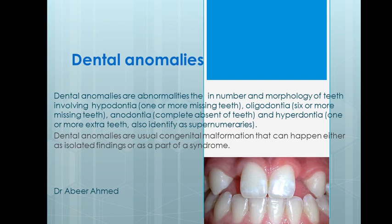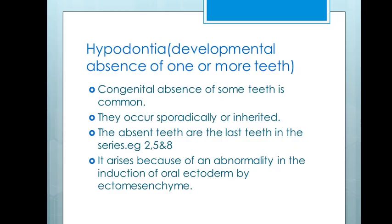Dental anomalies are the most usual congenital malformation. They can happen either as isolated findings or as part of a syndrome. This means that a patient presenting with a certain syndrome might also have the following dental abnormalities.